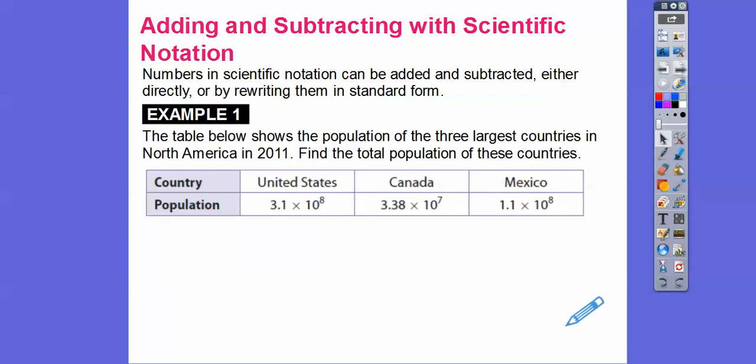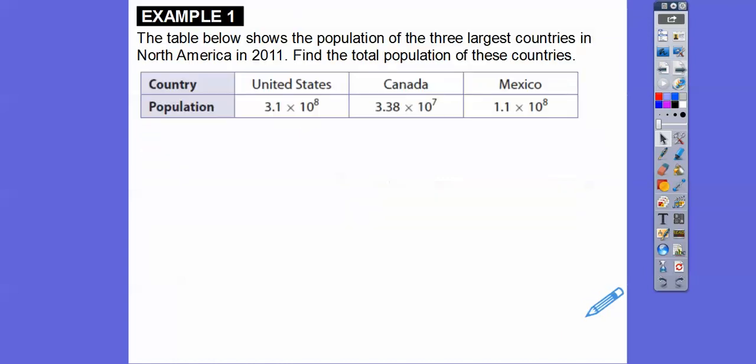So this table shows the population of the 3 largest countries in North America in 2011. Find the total population of these countries. There are a lot of people in the United States, Canada, and Mexico. Obviously, the United States has more population than Canada and Mexico.